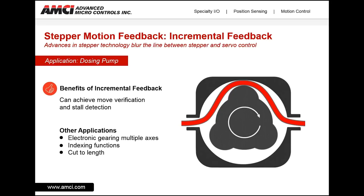One application that can take advantage of incremental encoder technology is a dosing pump. Dosing pumps are used to dispense precise amounts of liquid for filling applications and are used extensively in pharmaceuticals where repeatability and reliability are a must. The encoder feedback is used to verify the move was completed as expected. If something unexpected occurs during the move cycle, the control unit can use data from the incremental encoder to report that the move did not complete as expected and the system can react accordingly. Other applications that can benefit from incremental encoder feedback include electronic gearing, multiple axis indexing functions, and cut-to-length applications.